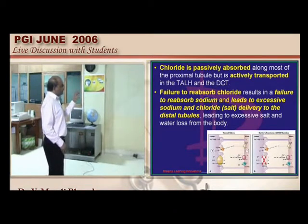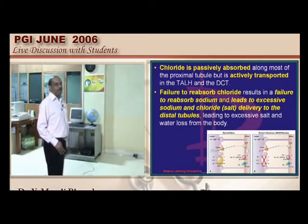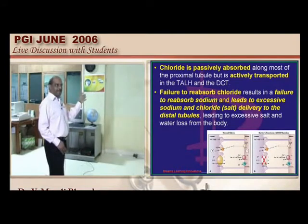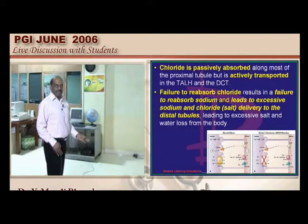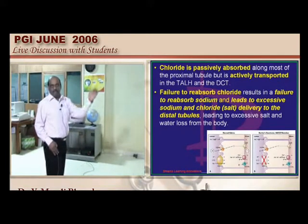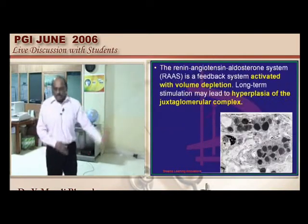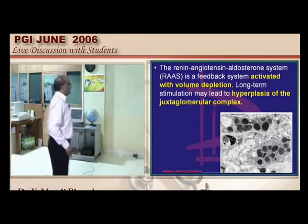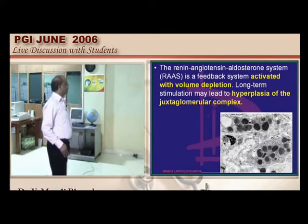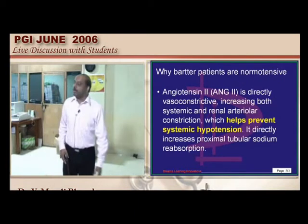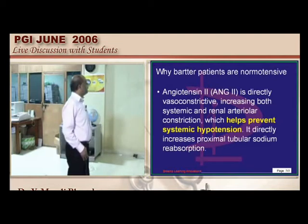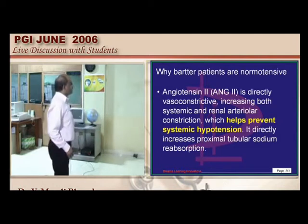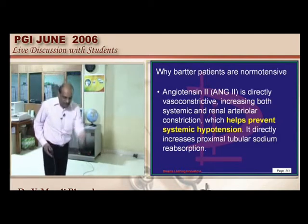Failure to reabsorb chloride delivers excessive sodium and chloride to the distal tubule, beyond its capacity to reabsorb. What is not reabsorbed at the TALH cannot be completely recovered at the distal tubule — that is the rule. This causes sodium and chloride wasting into urine. Loss of sodium chloride stimulates the renin-angiotensin system and leads to JGA hyperplasia.